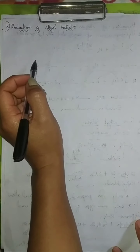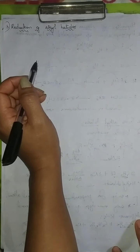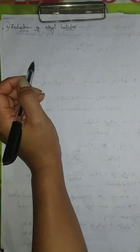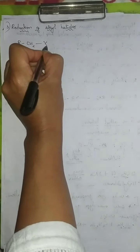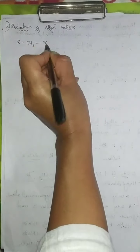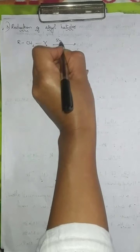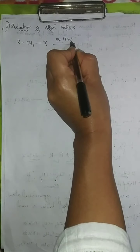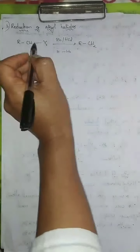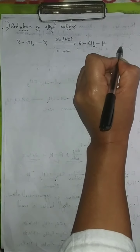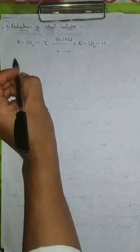The second preparation method from alkyl halides is reduction of alkyl halides. When metals react with acids, hydrogen gas is produced, and the hydrogen gas reduces the alkyl halide. The halogen atom is removed and hydrogen is added. For example, CH3Br reacts with a metal in the presence of acid; the C–Br bond breaks, hydrogen attaches to carbon, and HBr is released.